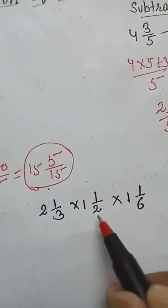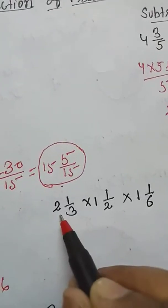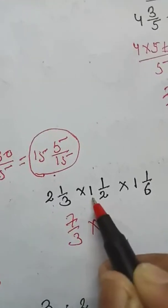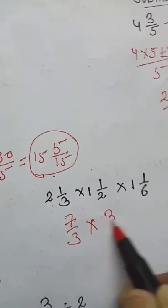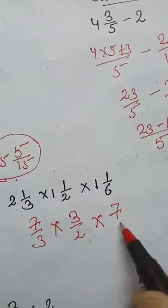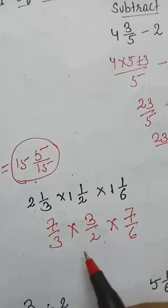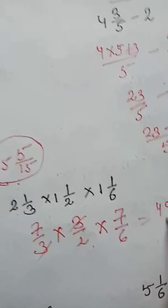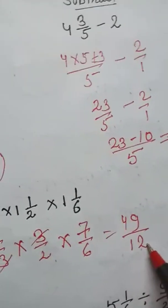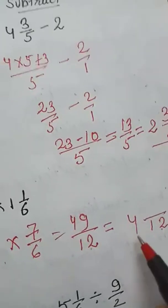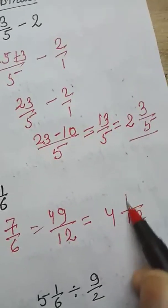Next multiplication: 2 and 1 upon 3 multiply 1 — first convert: 2 times 3 is 6 plus 1 gives 7 upon 3, multiply by 7 upon 6 (after simplification). Convert the improper fraction result into a mixed fraction: 12 goes into 49 with remainder 1, giving your answer.